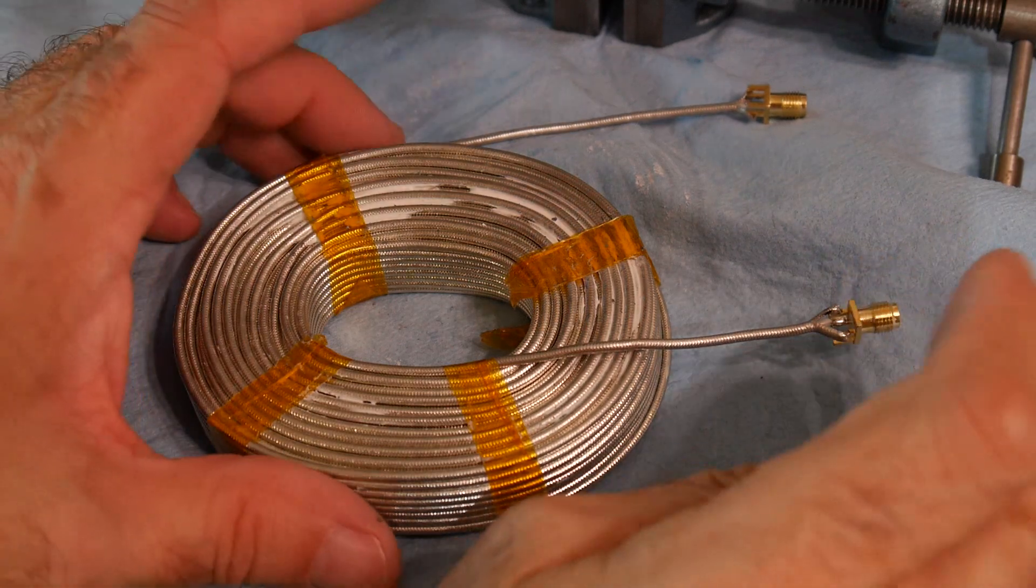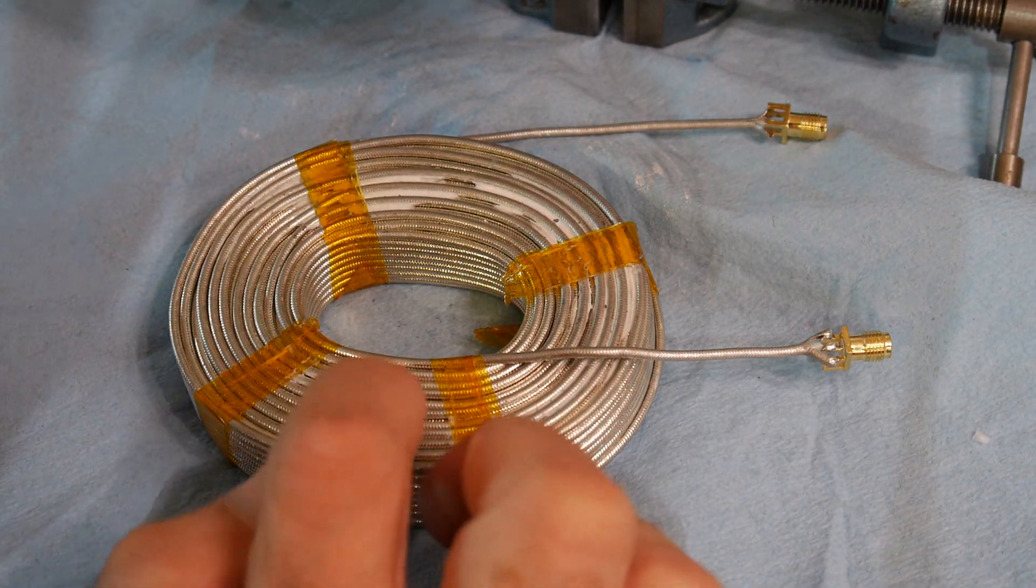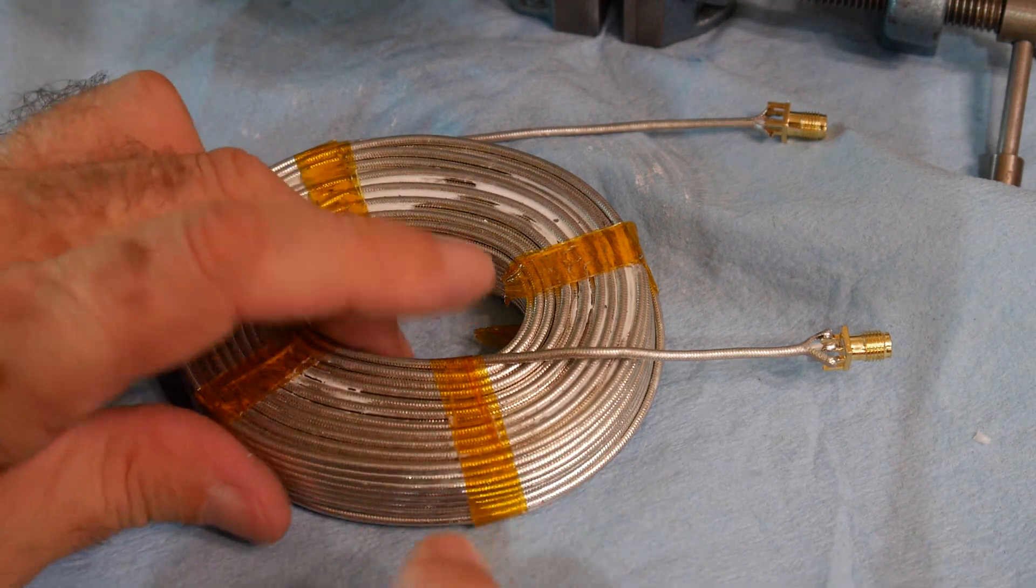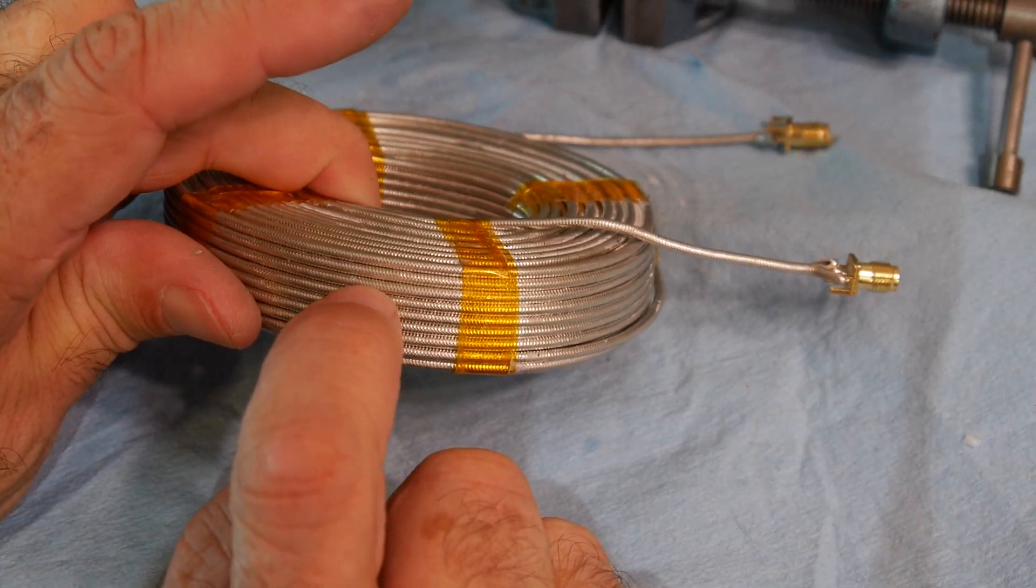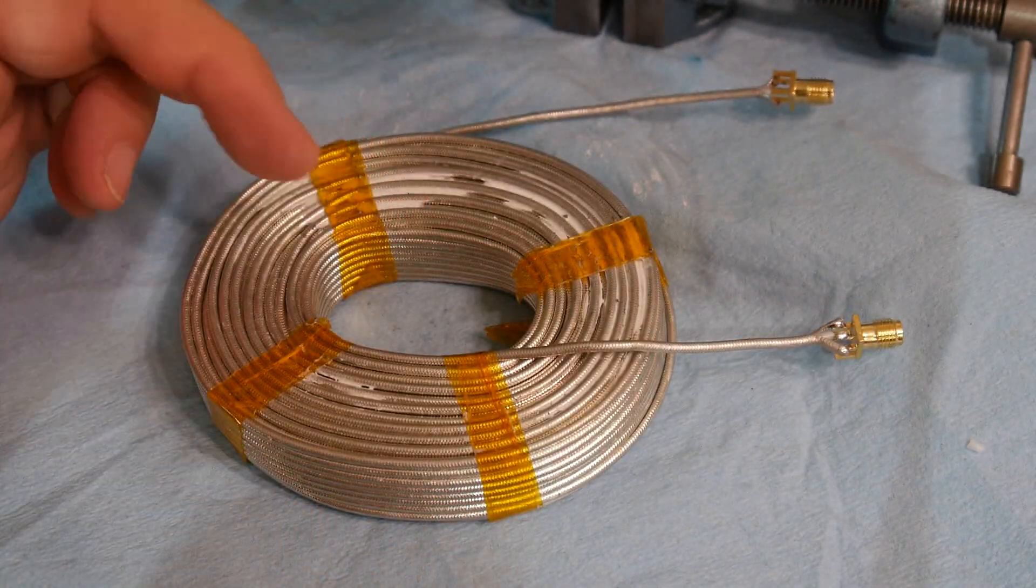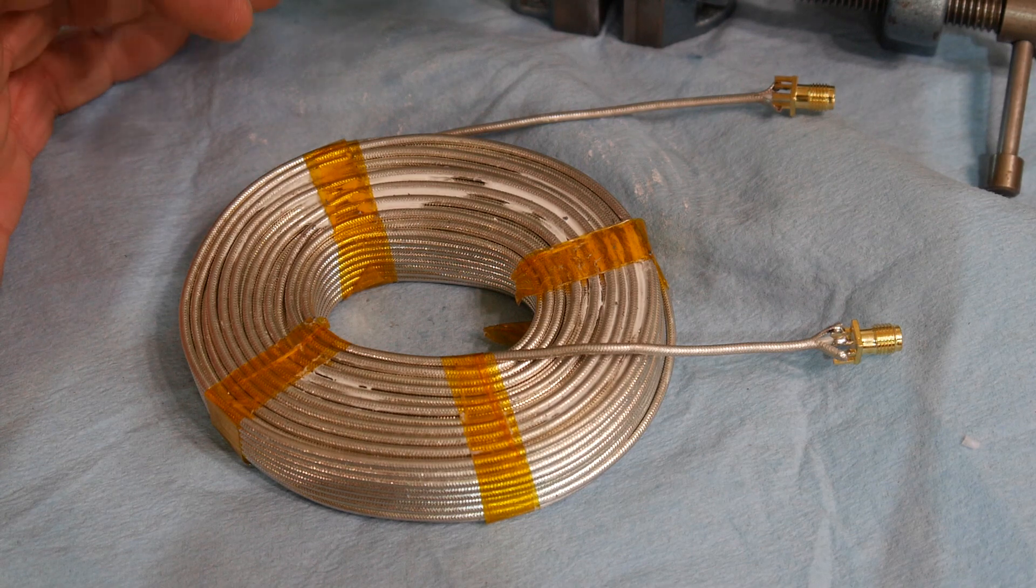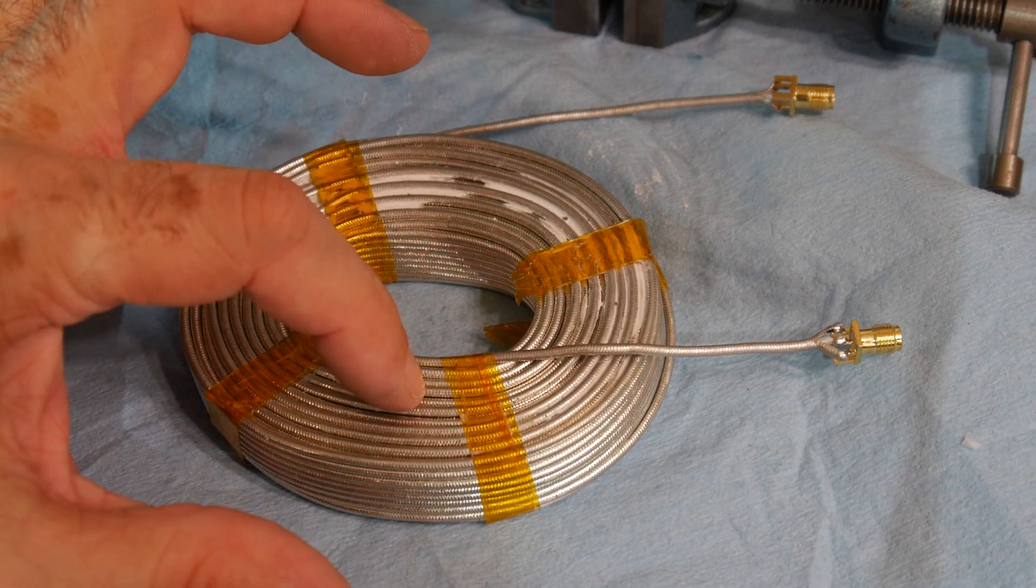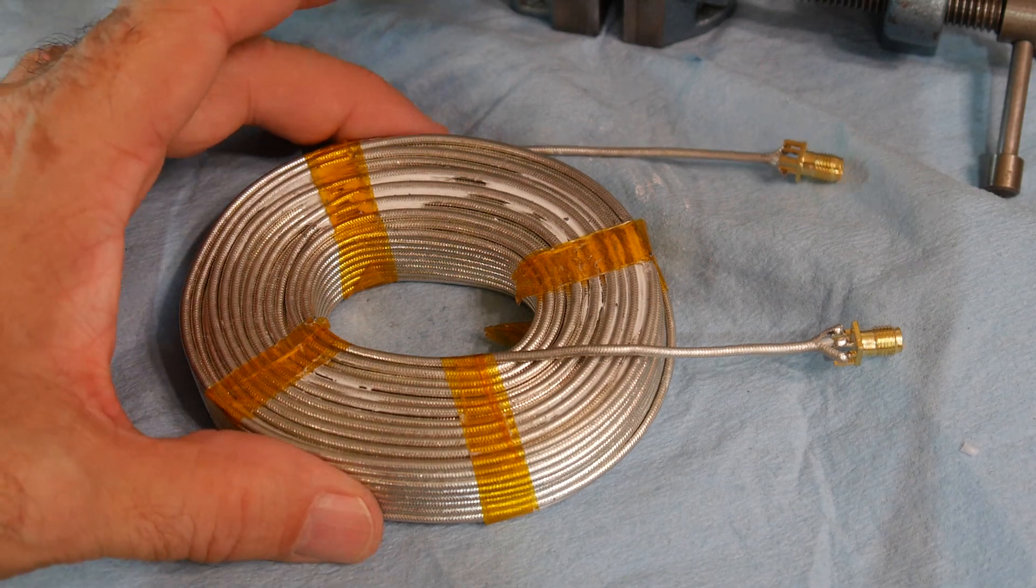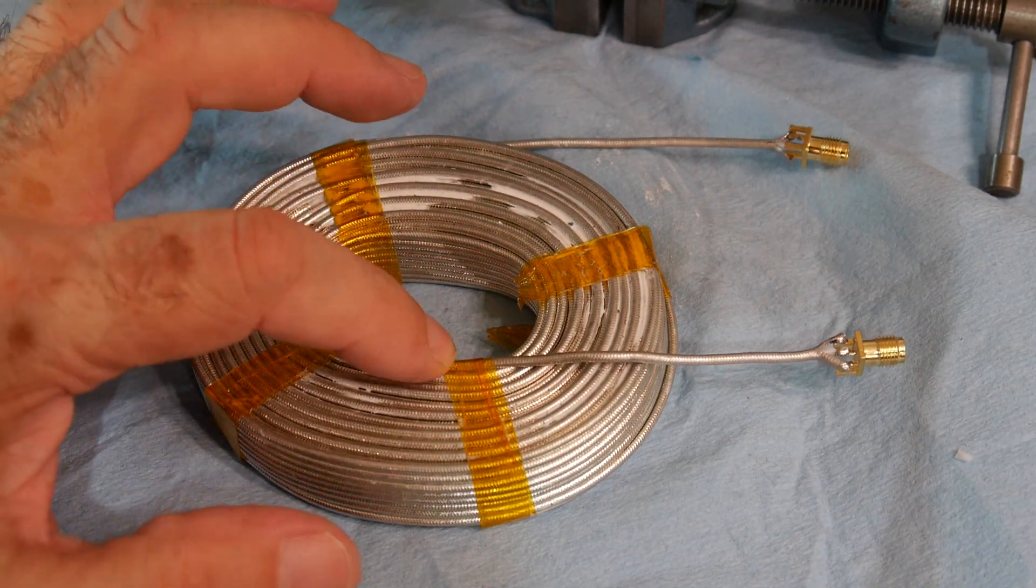All right, there we go we have our two SMA connectors and a lot of turns. So we can kind of guess one two three four five six seven eight nine ten eleven maybe twelve by one two three, so about nine by twelve. If it's ten by twelve that'd be a hundred and twenty turns. And if we figure it's about one foot around and there's a hundred turns that's a hundred feet. So yeah about a hundred feet of coax.